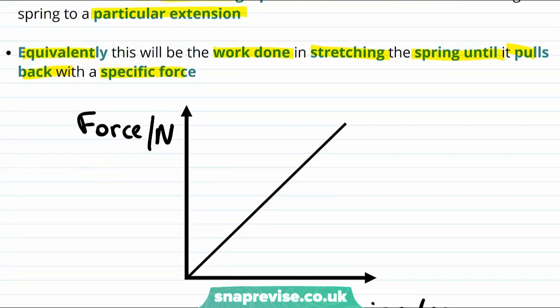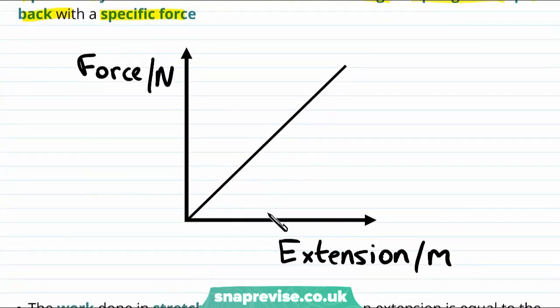So visualised on a graph we want to know how much work done is required to stretch the spring, for example this extension. Now of course looking at the graph we can see that this is entirely equivalent to asking how much work do we have to do on a spring to bring it to a point where it exerts a certain force on us.